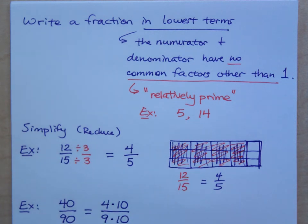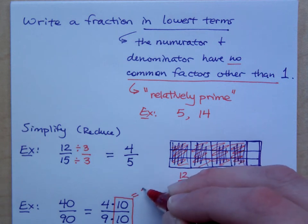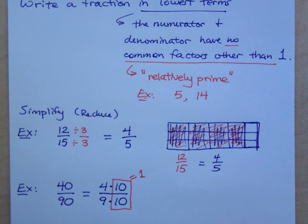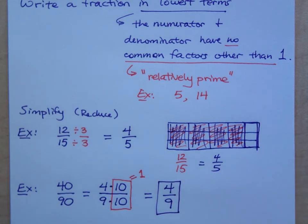When you have everything written in terms of multiplication, your math can be easy. What is 10 over 10? 10 over 10 is 1. So what's 4 over 9 times 1? Isn't that just 4 over 9?